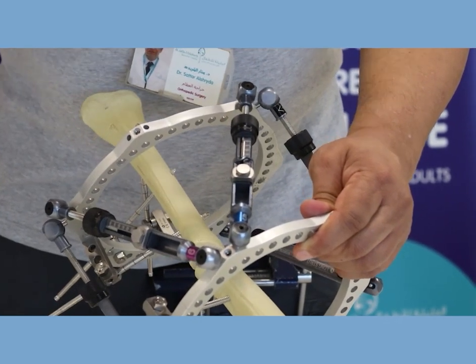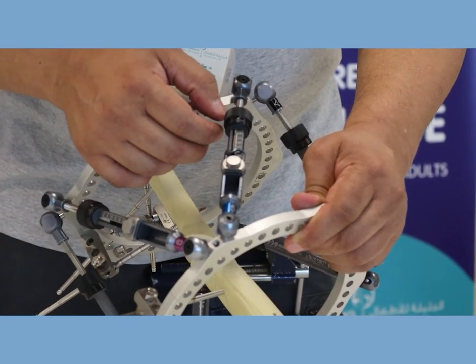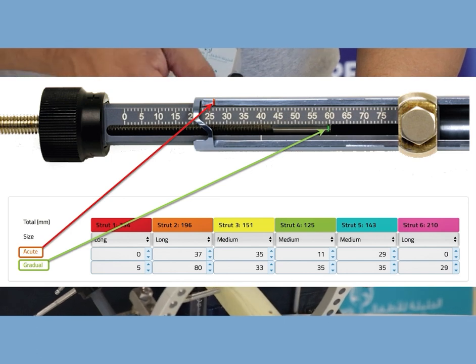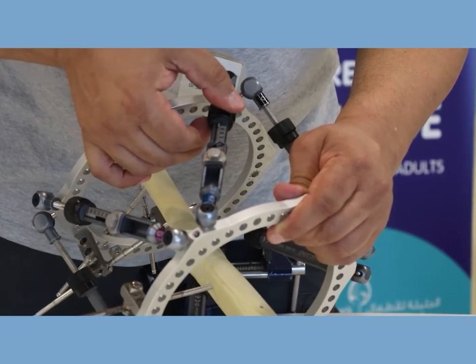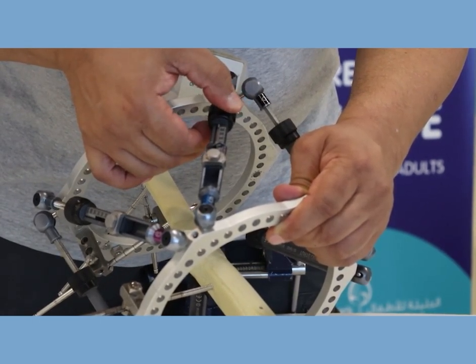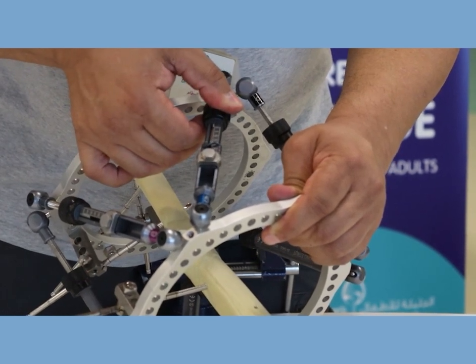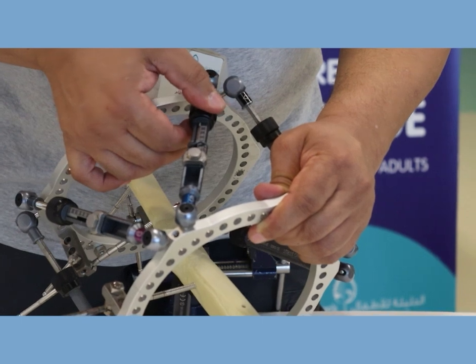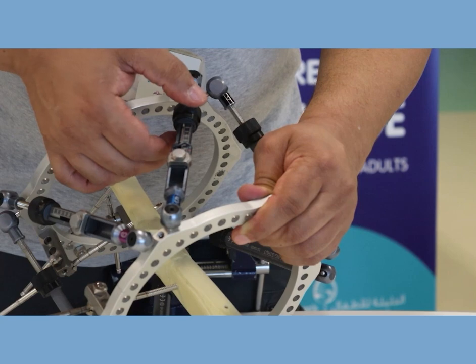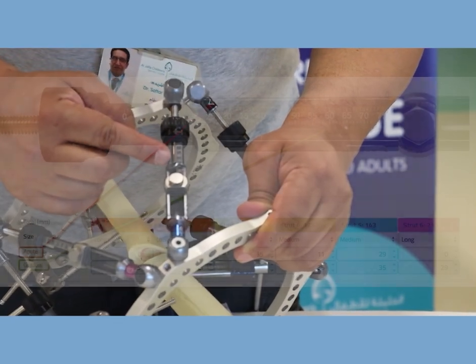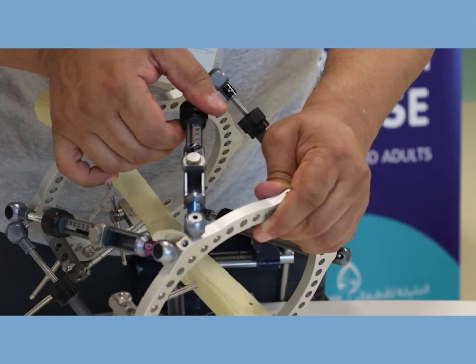Interestingly, on the TL Hex strut when you lengthen them the number gets smaller not bigger. So this is something to bear in mind. If this strut according to the program needs lengthening, you turn it. When you turn half a turn you hear a click. Then you have to pull it up and you turn it again and you hear another click. You see the green marker change according to the numbers, and this is what the patient does as they look at the program.